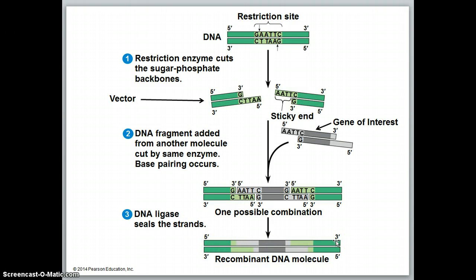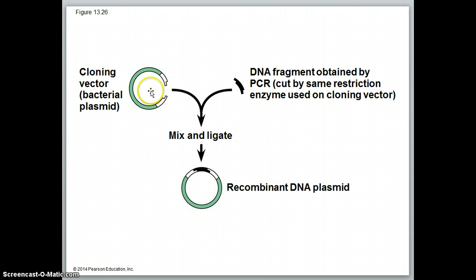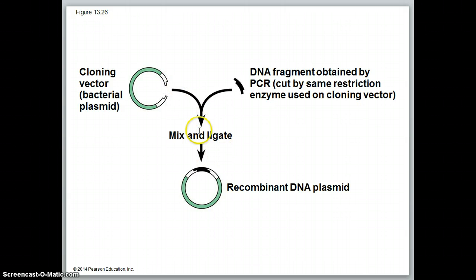Here's a plasmid — this is our vector. Here's the fragment with our gene of interest. The gene of interest could be from human DNA, it could be from jellyfish with the GFP gene, it could be from any other organism. We take that gene of interest, put it inside our vector or plasmid, use DNA ligase, and we can create a recombinant DNA plasmid. This recombinant DNA plasmid can then be placed into bacteria through transformation. The bacteria can grow and produce either that gene of interest or make more copies of that plasmid.